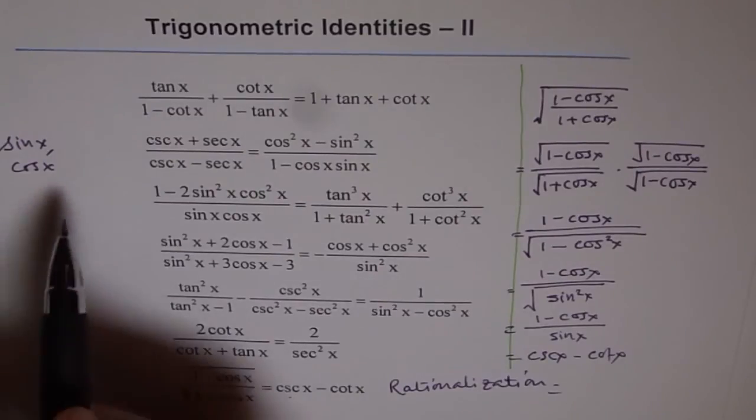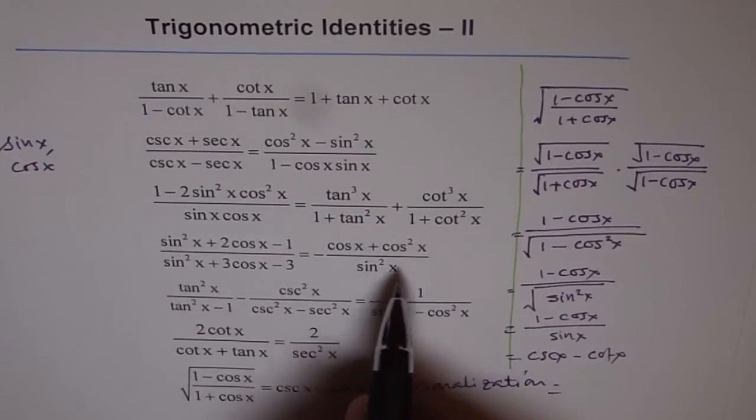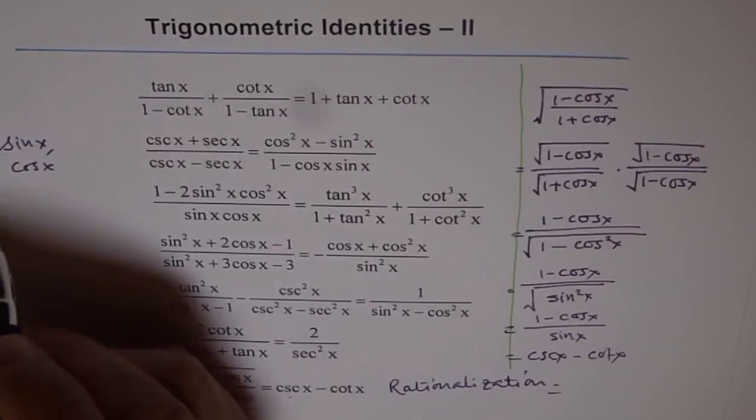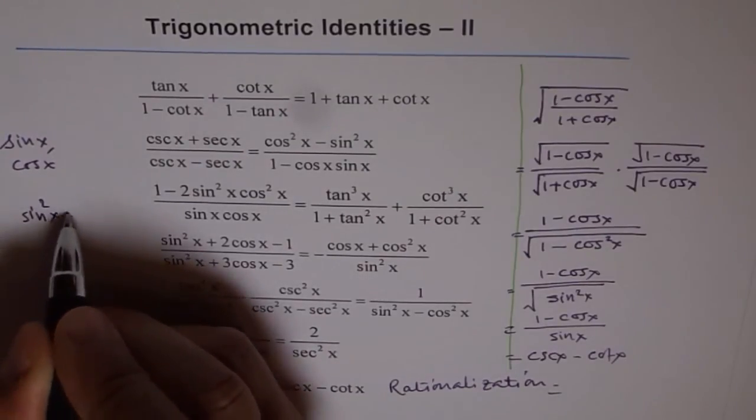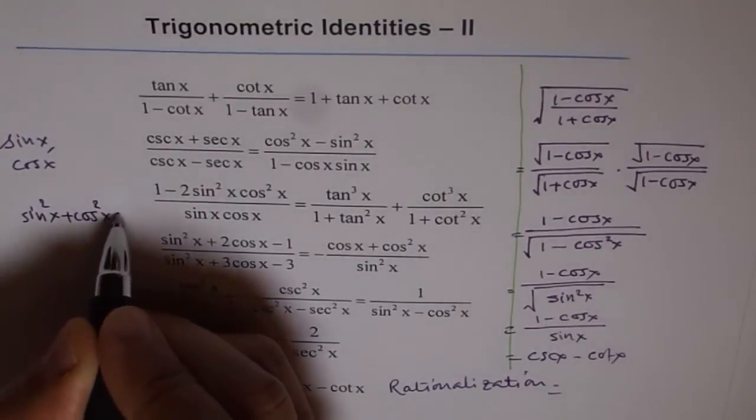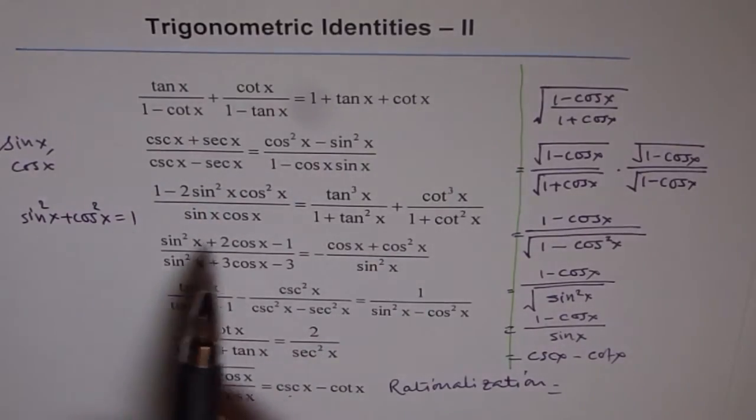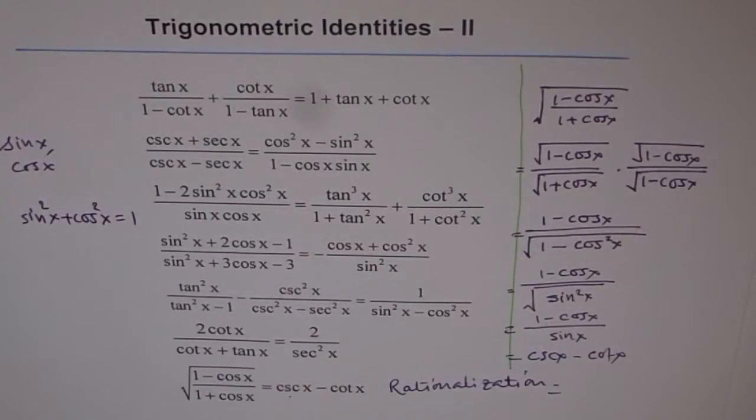And, second strategy, like these, whenever you have squares of sine and cosine, you know what? You have to use, sine square x plus cos square x equals to one. And once you use this, you should be good to go. Here also, I will suggest, write in terms of sine and cosine. Don't get lost into complicated methods.